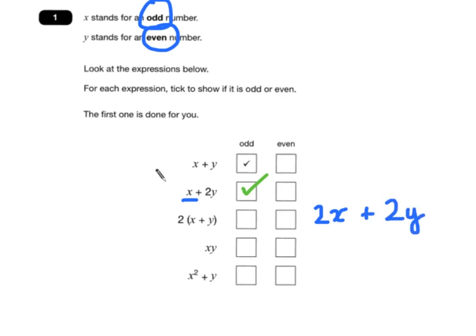And if you remember, 2 times an odd number is always even. 2 times an even number is always even, so this will be even.